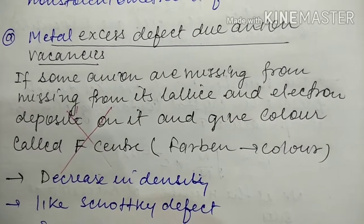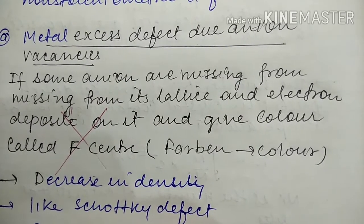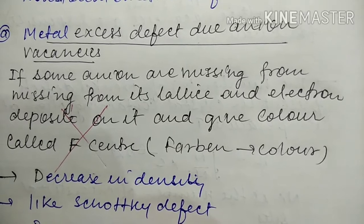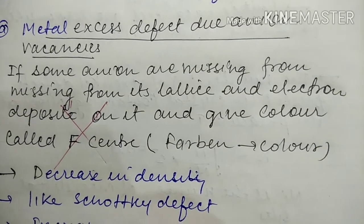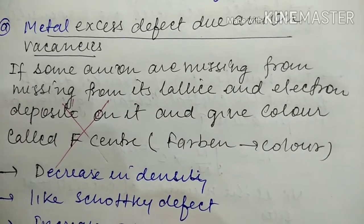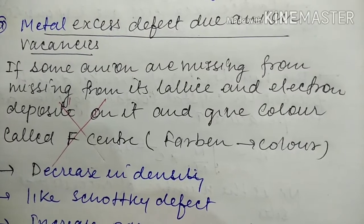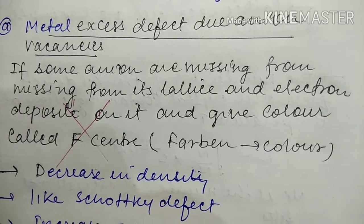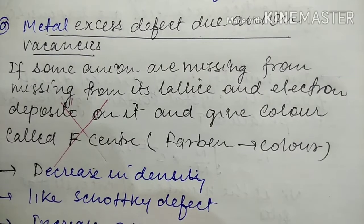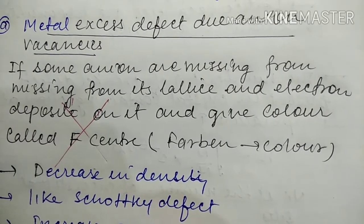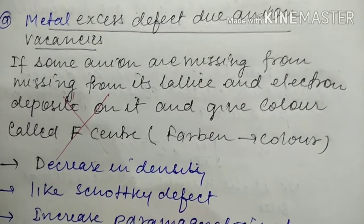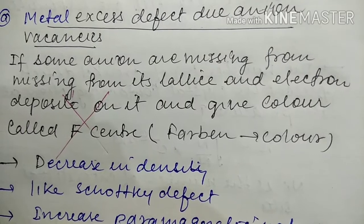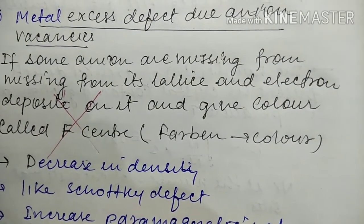The first type is metal excess defect due to anion vacancies. When an anion is removed from its lattice site, an electron occupies that site — it becomes trapped and shows color. This point is called an F-center, where 'F' stands for 'Farbe' meaning color. Definition: if an anion is missing from its lattice site and an electron deposits on it, giving color, it is called an F-center. This is similar to a Schottky defect and also produces paramagnetic properties.